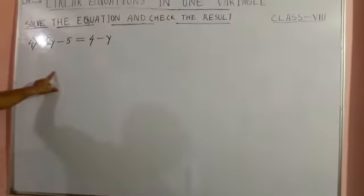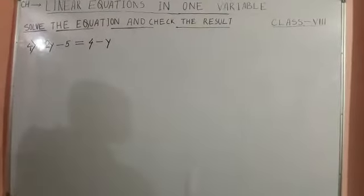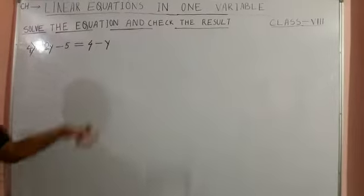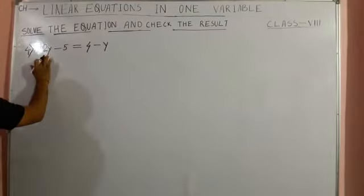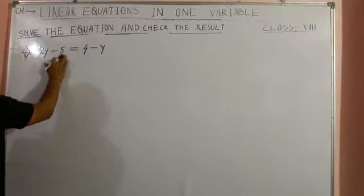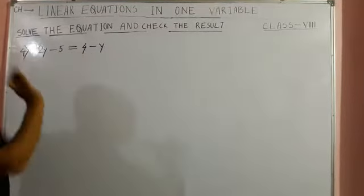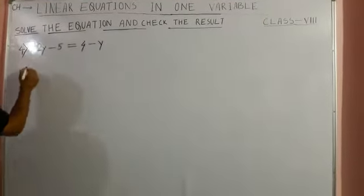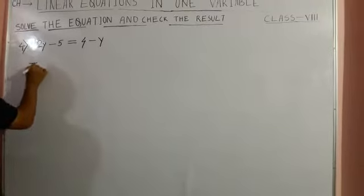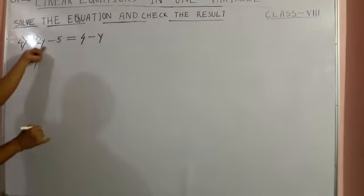Hello students, to check the result one more sum we will discuss here. We have the equation 2y minus 5 equals 4 minus y. First we have to solve this one. In left hand side, the variable term...